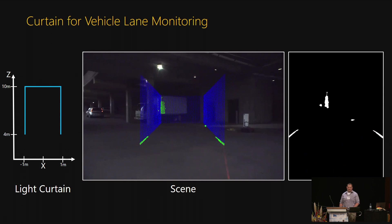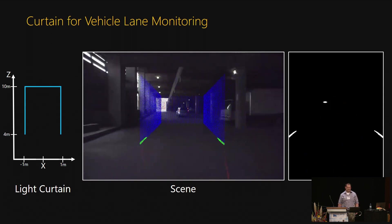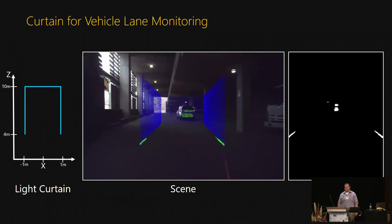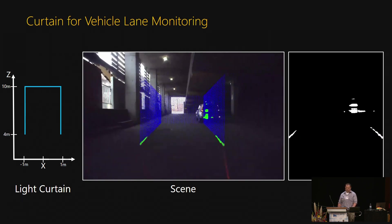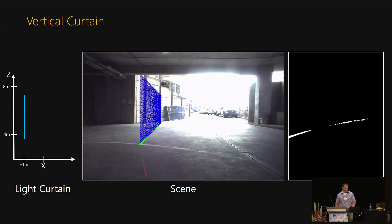This is a curtain for vehicle lane monitoring. It is useful for detecting objects that come into the vehicle's path from the sides and the front. This is a vertical curtain. It can detect vehicles as they back out of parking spaces.